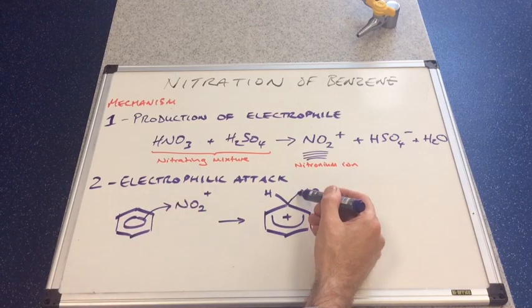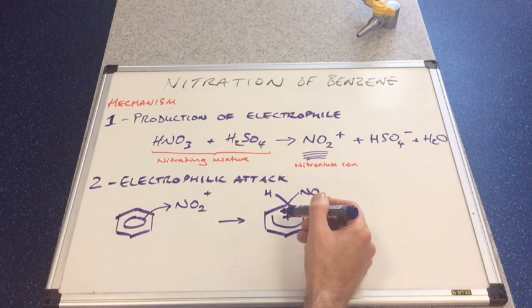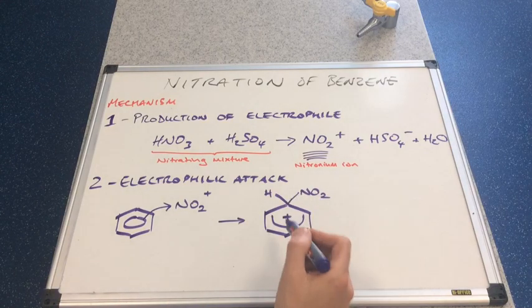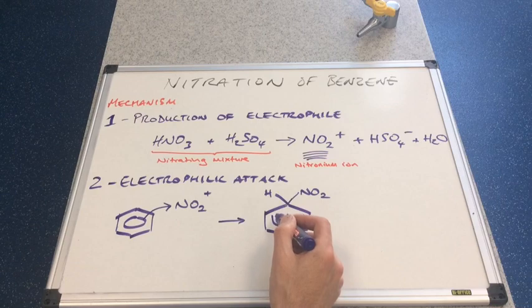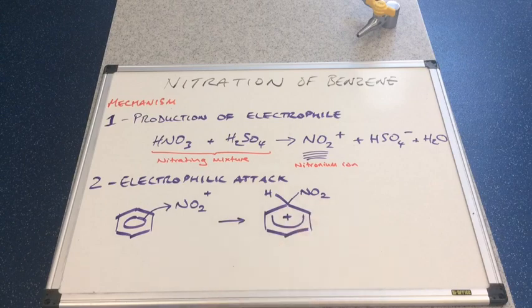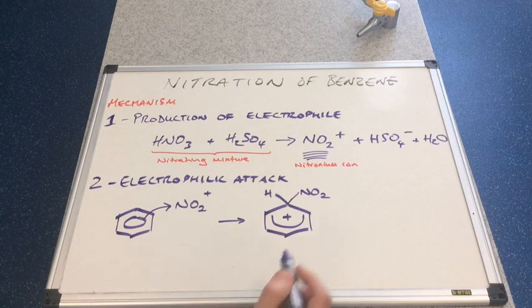Effectively, the pair of electrons that have enabled this bond to form, this covalent bond, have come from the pi electron cloud. What I always tell my students is, general rule of thumb, cover five carbons with your partial electron cloud. It looks a bit like a horseshoe. So four electrons involved, but you must cover five carbons with it.